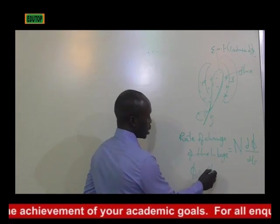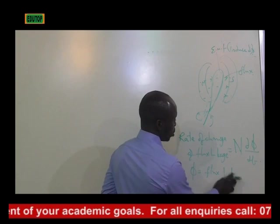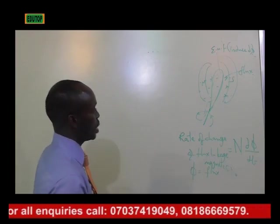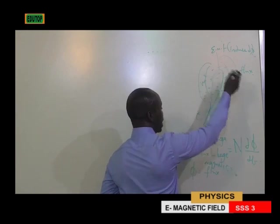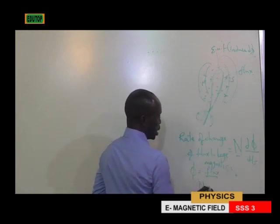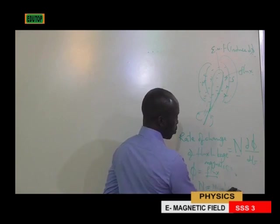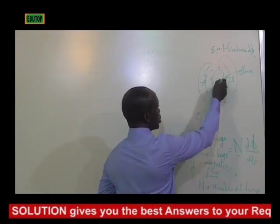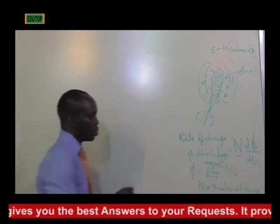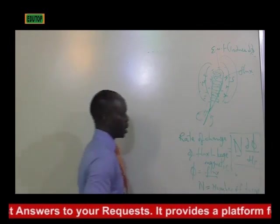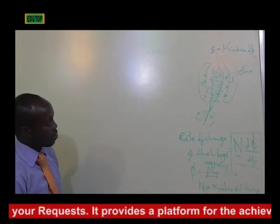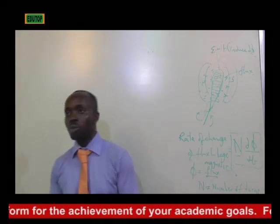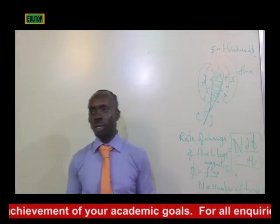What is Φ (phi)? Phi is flux linkage — or simply magnetic flux. Your N here is the number of turns of the coil. So you can calculate all of that using this formula. If you have been asked what is the formula for the rate of change of flux linkage, you give them N dΦ/dt.